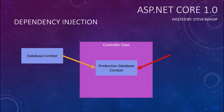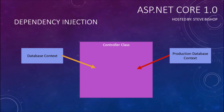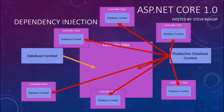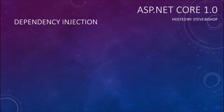Now this gets only worse when you start to think about all of the other controller classes that you've got in your application. You've got to go through all of those other controllers out there in your codebase and replace that database context with the production database context. So how does dependency injection fix this?